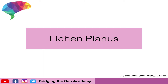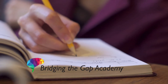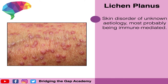Welcome back to the second video for the dermatology series. This week we are covering lichen planus. Lichen planus is a condition in which we don't really know the cause, however we can probably assume it is most likely T-cell mediated. It can occur at any age, however it is more common in middle-aged people and is strongly associated with primary biliary cirrhosis and also hepatitis B and C.